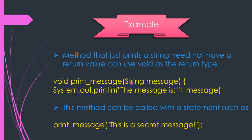So void is a special return type because it is used when the method does not have a return value. In this case, the method only prints a string and has no return value, which is why we used void here. And this method can be called with a statement like the one shown.